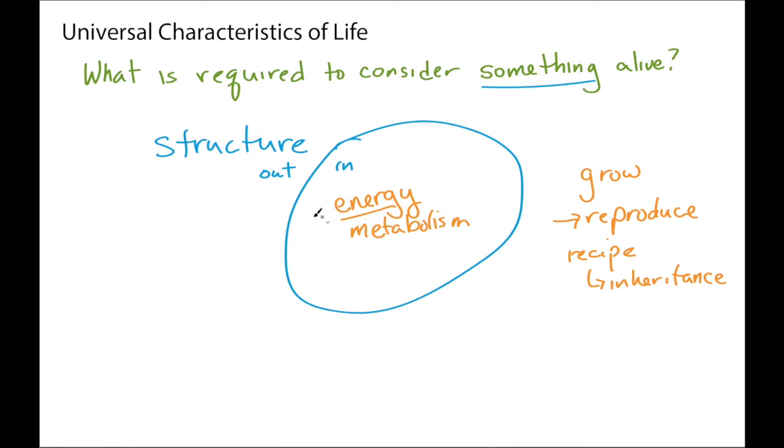So basically for something to be alive, we have to have a structure that can harvest energy to grow and reproduce. And the instructions for doing so need to be passed on. One of the key things is for this energy and metabolism and the chemical structures to keep working properly is that the inside of the cell needs to be